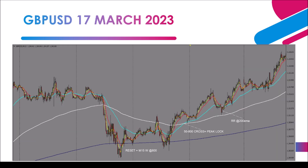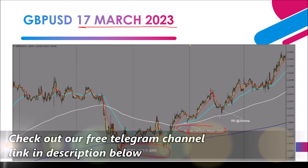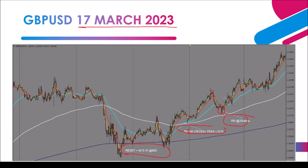Last but not least, GBP/USD on the 17th of March 2023. We had a W pattern on the 800 EMA, then a 5/200 EMA cross followed by a 50/200 EMA cross, after which we anticipated a pullback. The pullback was confirmed by a railroad track candlestick pattern — abbreviated RR — at the 200 EMA, providing the entry signal.